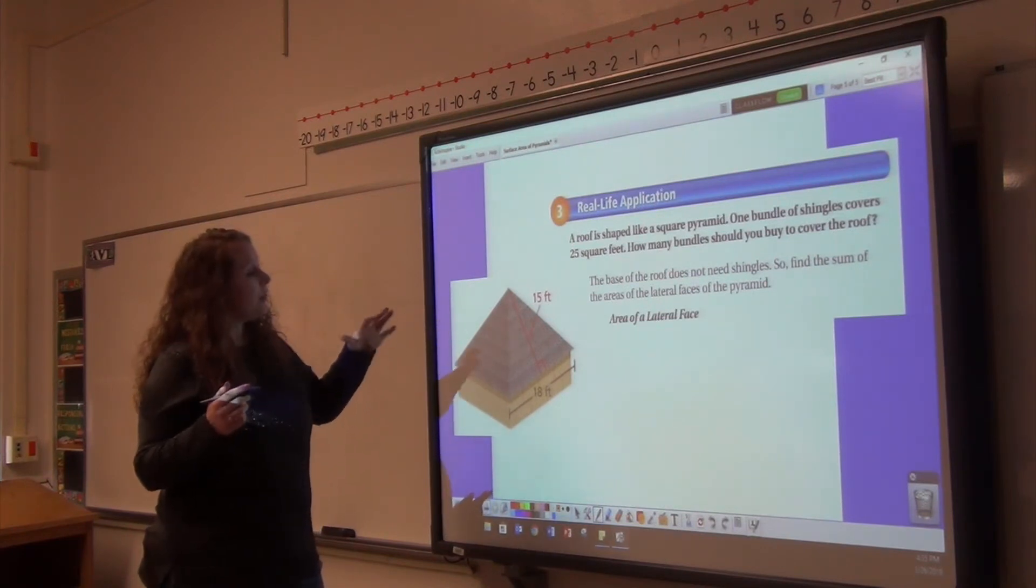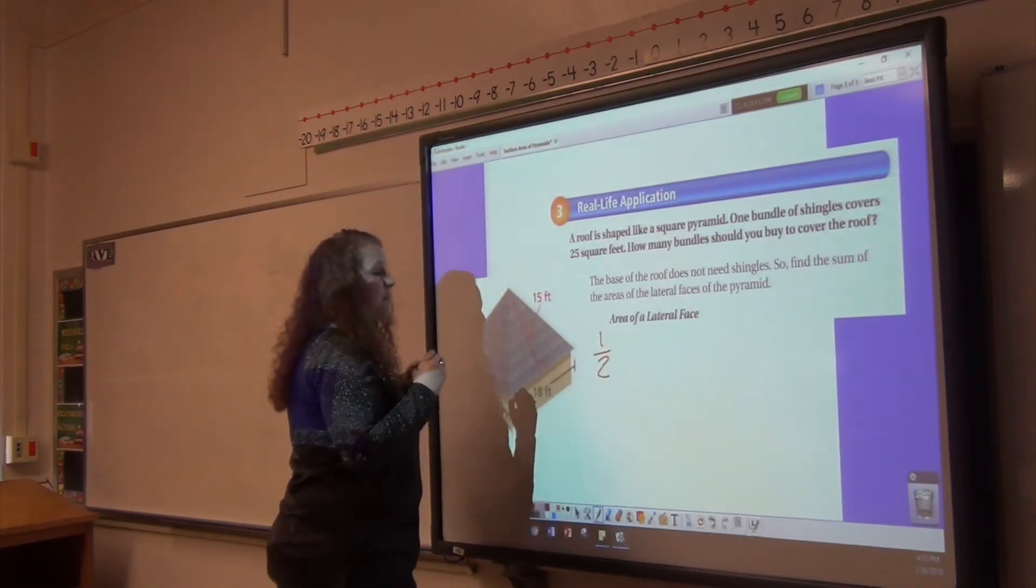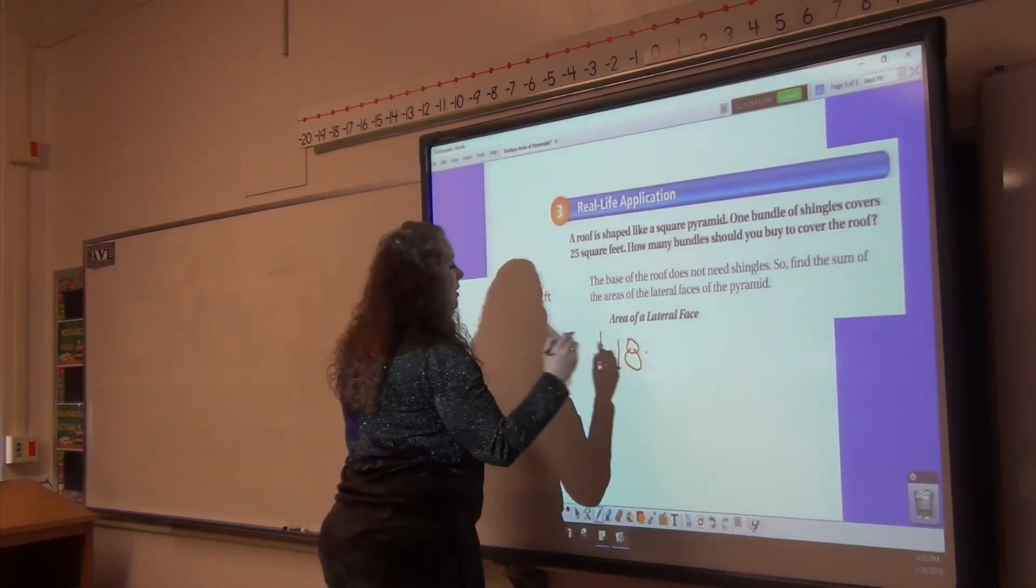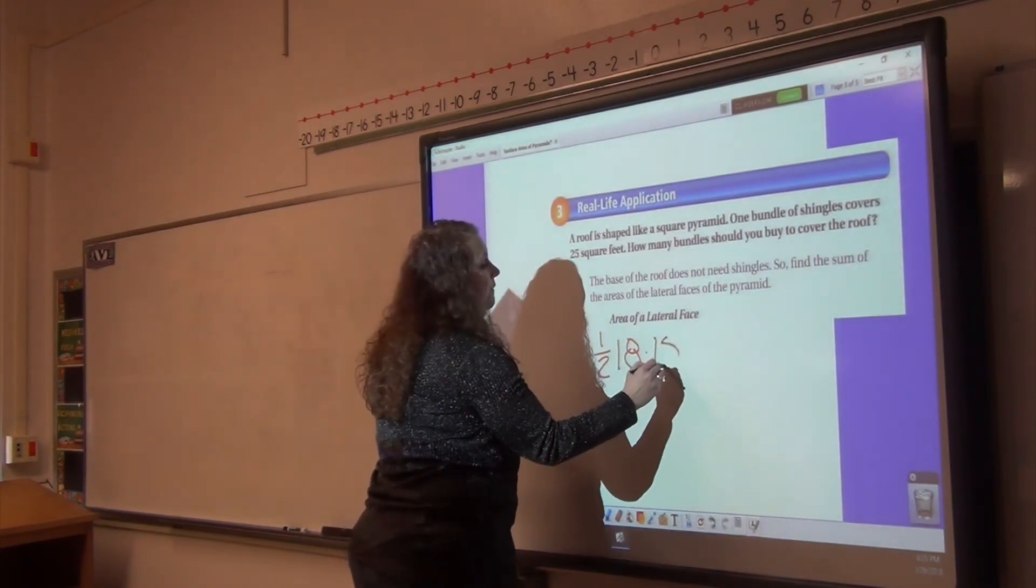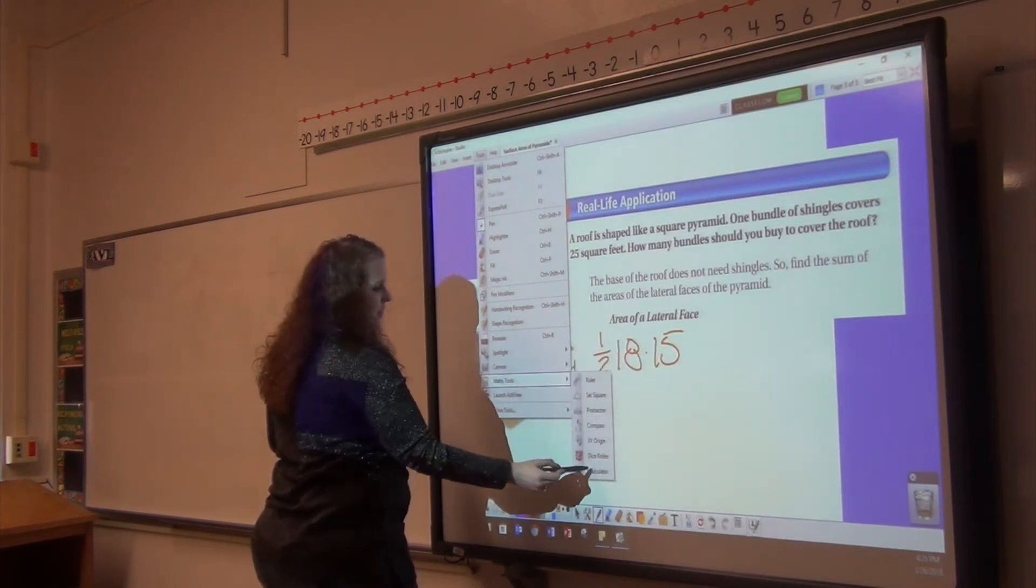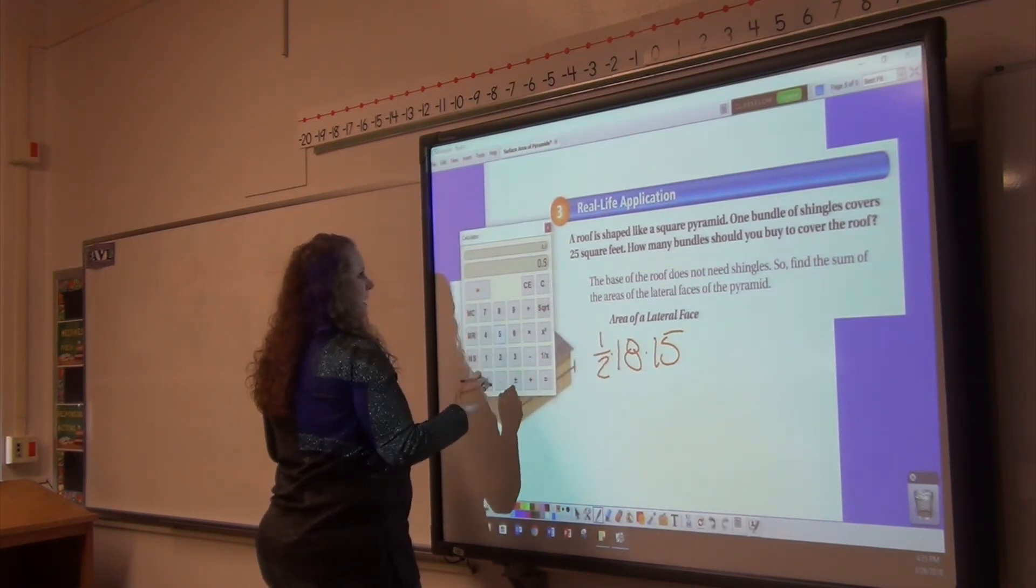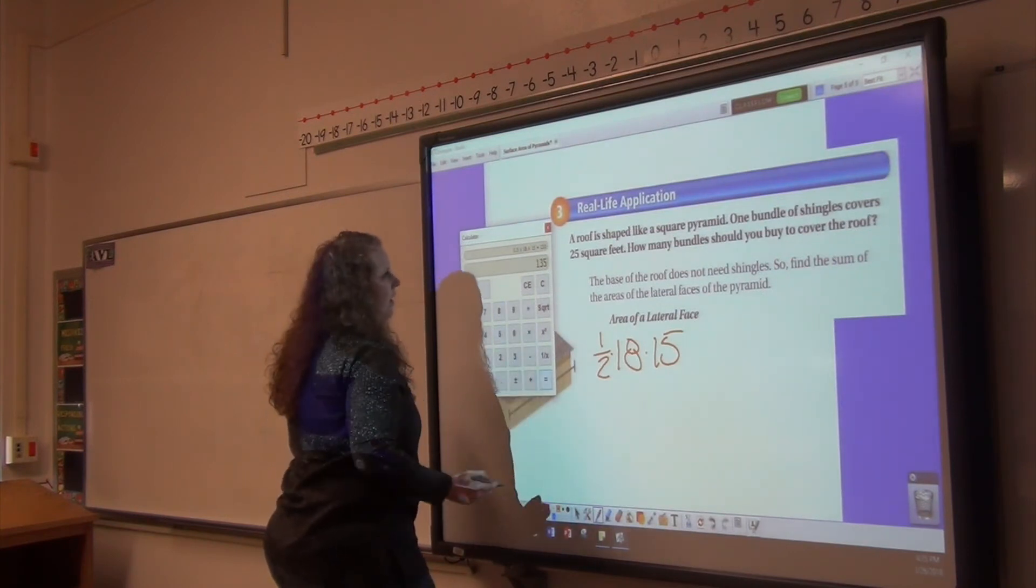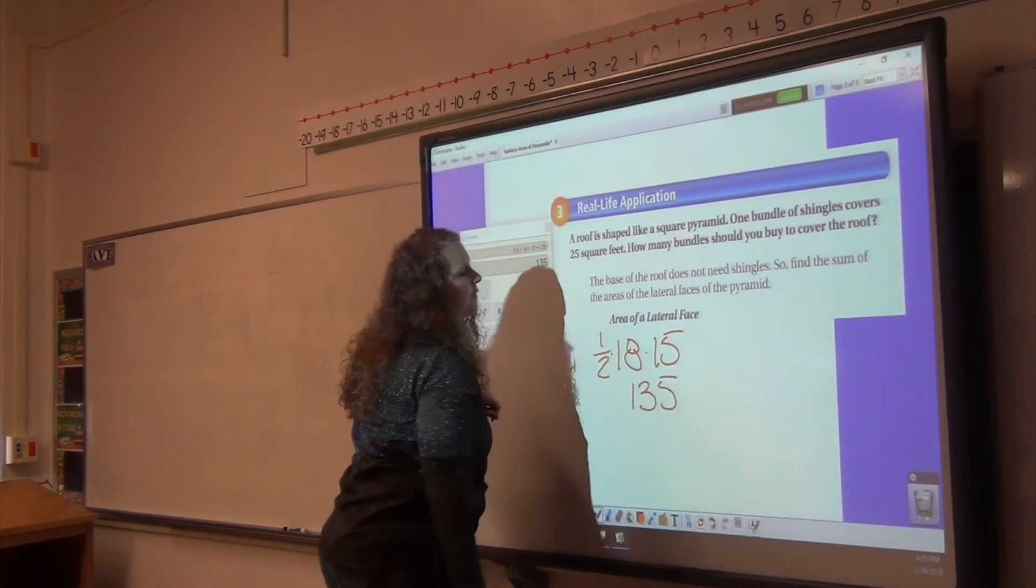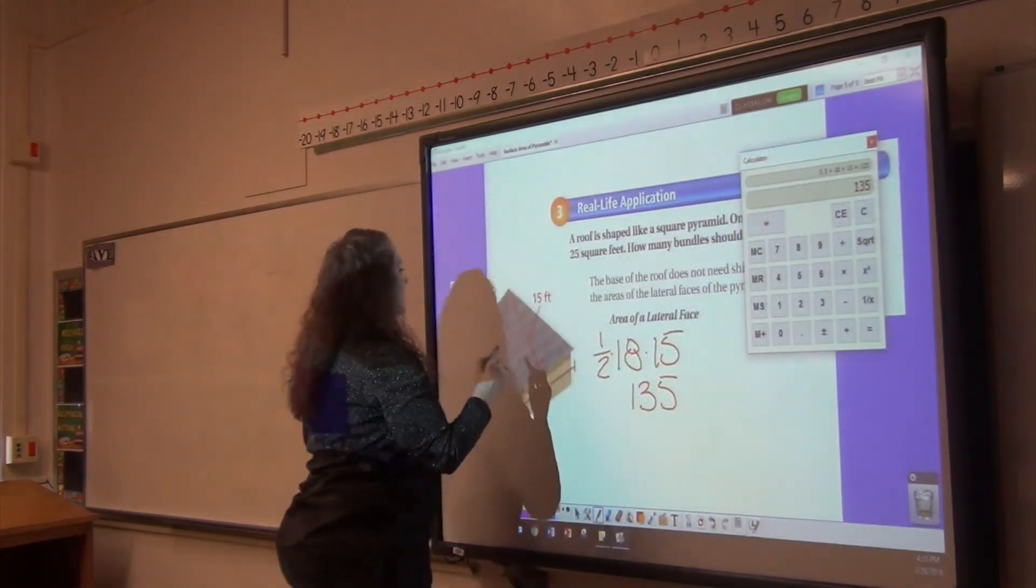So we need to find one of the sides, the area of one of the sides, and then multiply by four. Our slant height is 15, so it's going to be one-half times base times height. Base is 18. Slant height is 15. I'm being a little lazy, so we're totally going to pull out our calculator here.